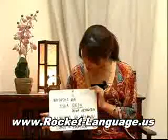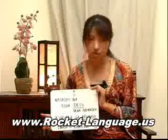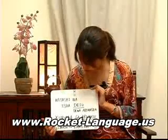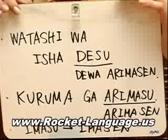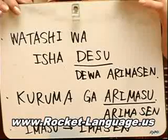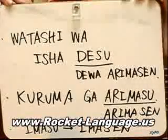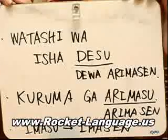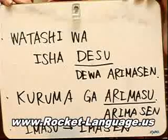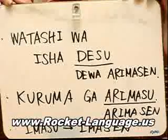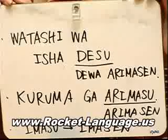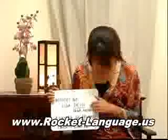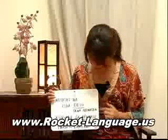I have another example using 'there is / there are.' Let's say it was 'kuruma ga arimasu' — there is a car. And now you say there isn't a car: 'kuruma ga arimasen.' Very similar — you use arimasen both times.